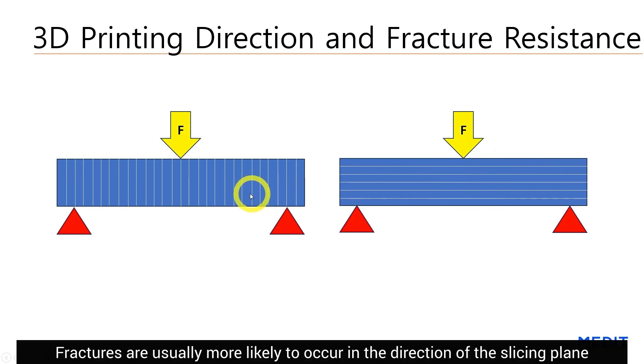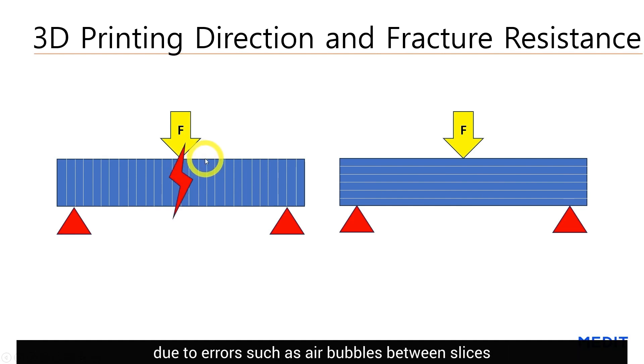Fractures are usually more likely to occur in the direction of slicing plane due to errors such as air bubbles between slices.